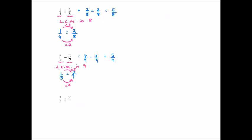Let's consider one final example before you practise: four fifths plus two thirds. The denominators are not equal, so we find the lowest common multiple of five and three. The smallest number in both their times tables is fifteen. To get from five to fifteen we multiply by three, so we also multiply the numerator: four times three is twelve. So four fifths equals twelve fifteenths.